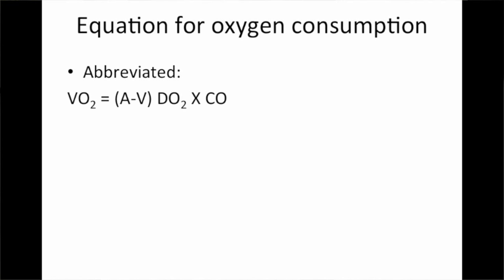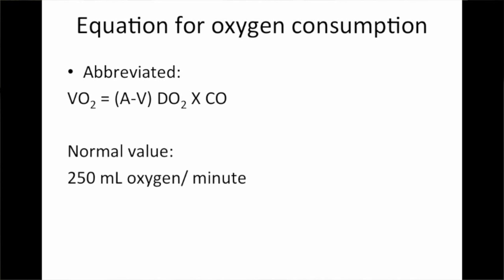Our next step is to derive the equation for oxygen consumption. VO2 can be described as the product of the AVDO2 times the cardiac output. If you know how much oxygen is being consumed per unit of blood, and you know how much blood is moving through the body per unit time, multiplying those together gives you oxygen consumed per unit time. The normal oxygen consumption for a person at normal temperature and barometric pressure is 250 mL of oxygen per minute.